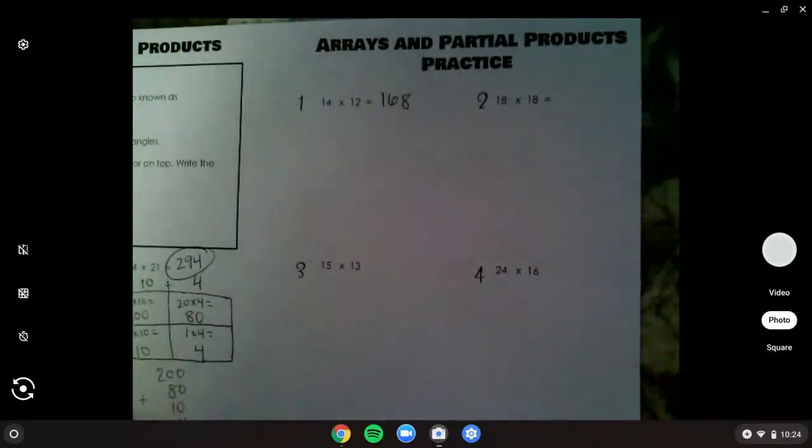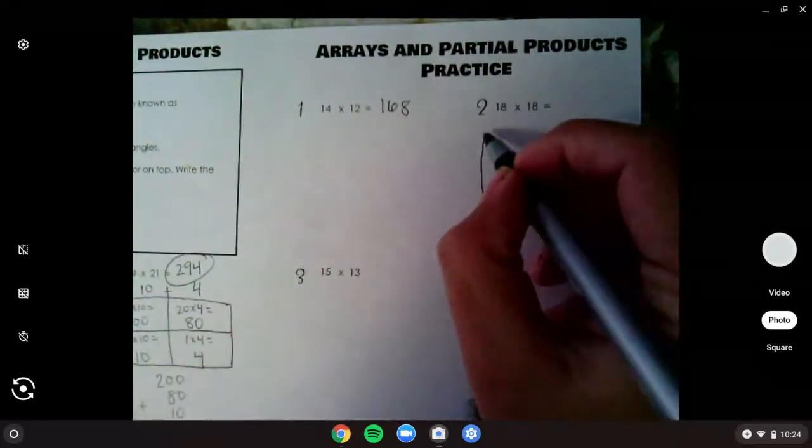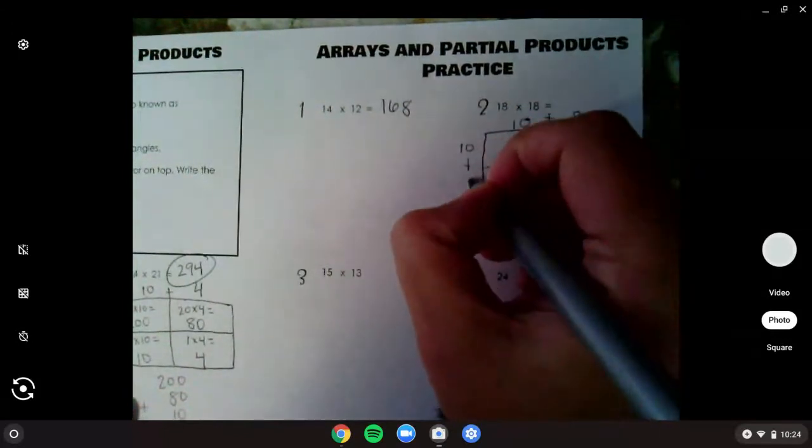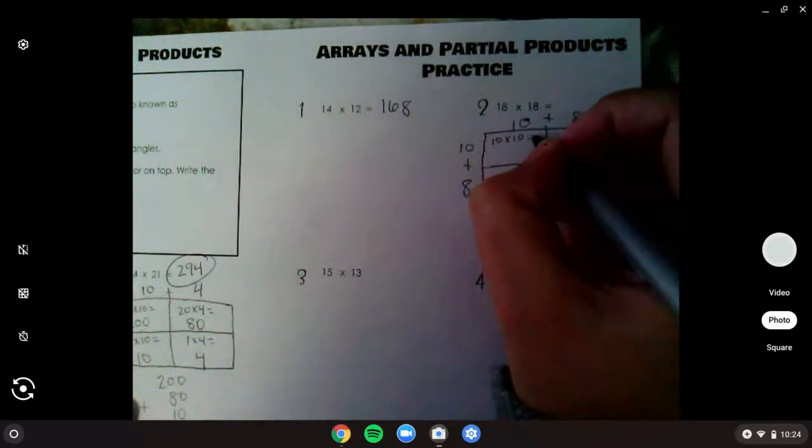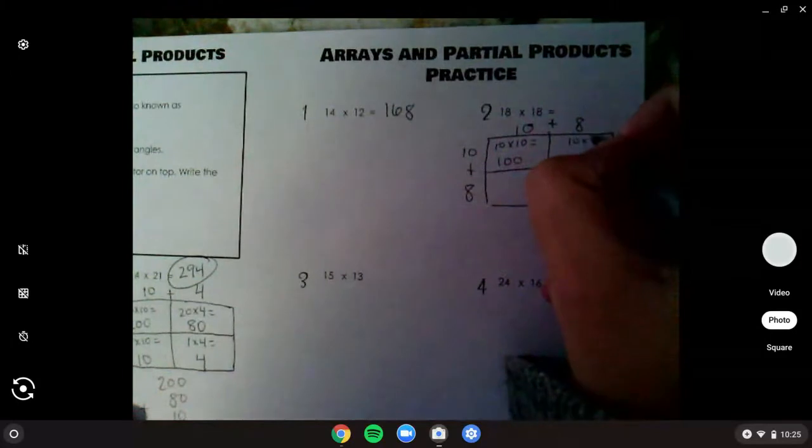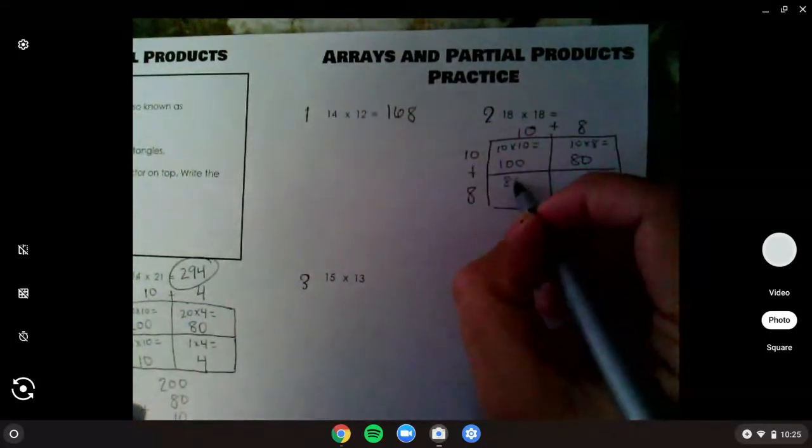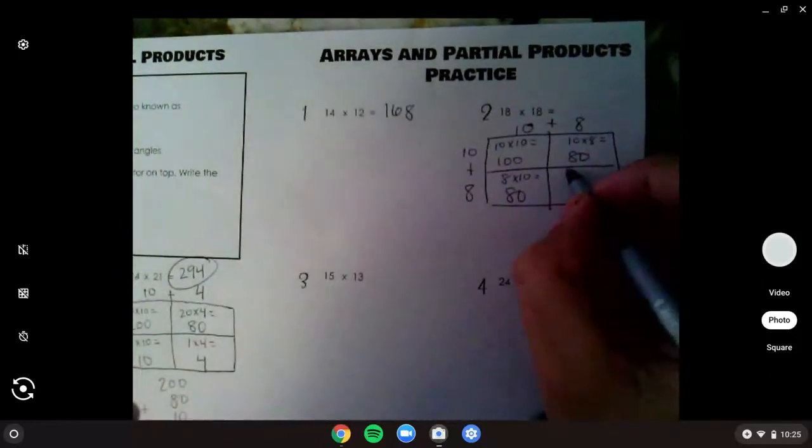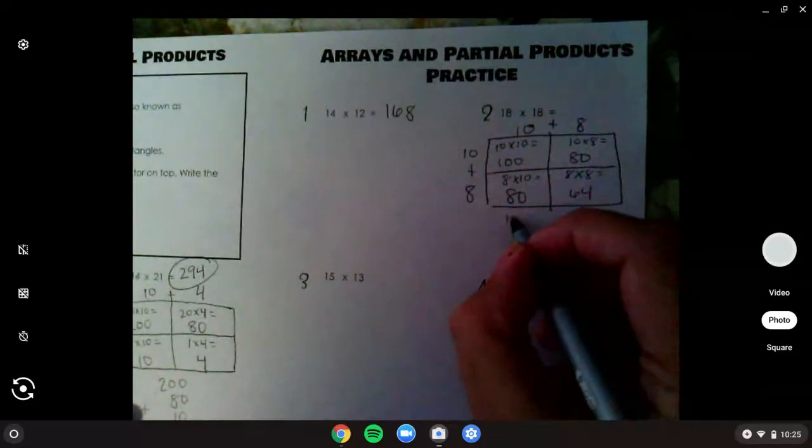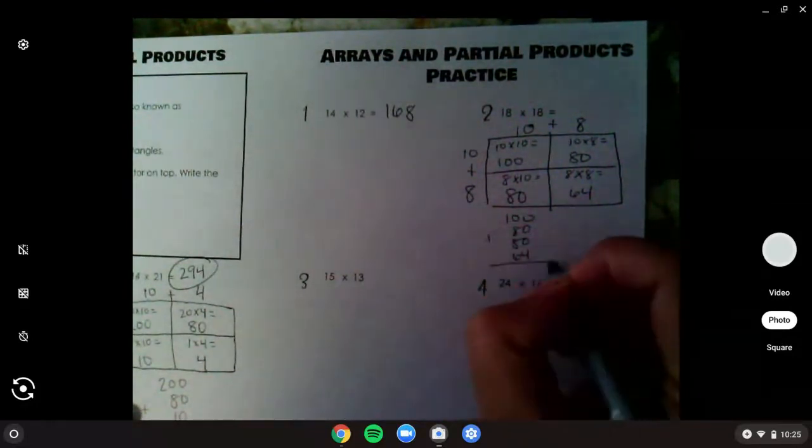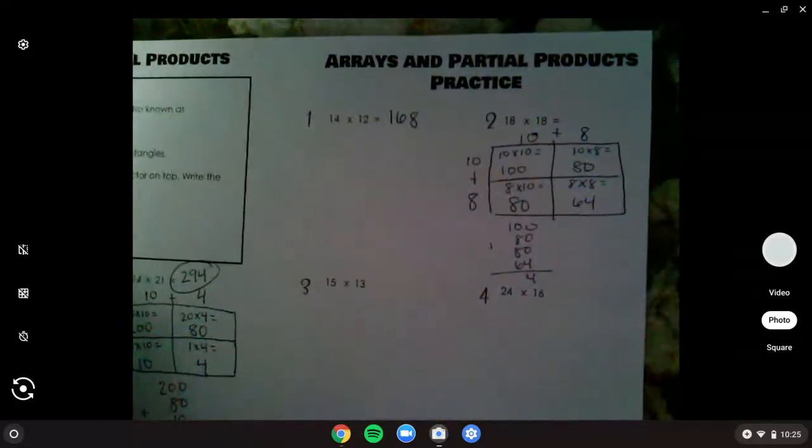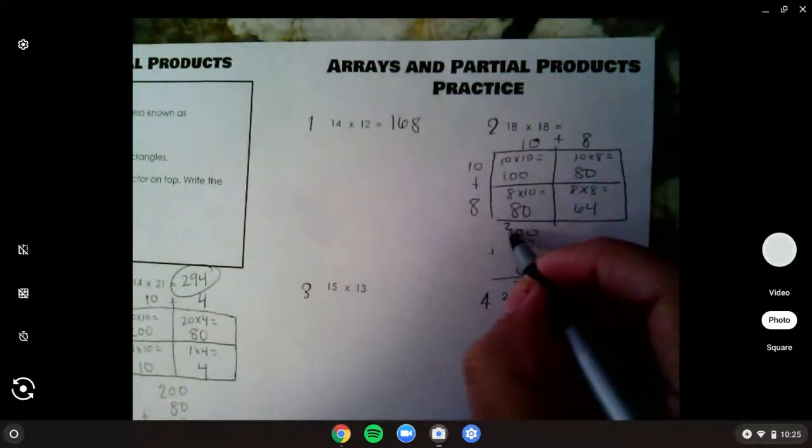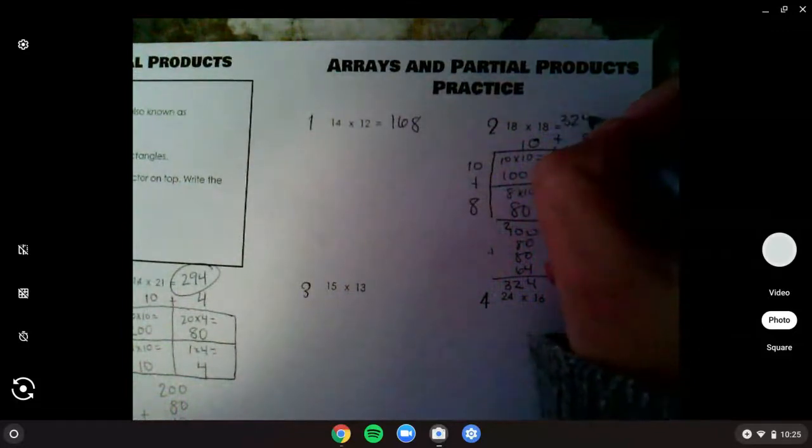You should have gotten 18 times 18. Let's go through and do the expanded way on this, just to make sure you did it right. So 10 plus 8, 10 plus 8, so 10 times 10, left times top, is 100. 10 times 8 is 80. 8 times 10 is the same as 10 times 8, so I know that that's 80. And 8 times 8 is 64. So if we add 100, 80, 80, and 64 together, we should get 4. 8 plus 8 is 16, plus 6 more, will get us 22. And 2 plus 1 is 3, 324 for that product.